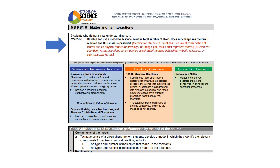So let's start by talking about what an evidence statement is. There is one evidence statement for each performance expectation, and they provide details for how students will demonstrate how they have met that performance expectation. They are available for all performance expectations for kindergarten through high school. Remember that the performance expectation describes how a student will be assessed on the standard. By writing objectives using these evidence statements, you are also really looking at what your assessments need to have in them as well. So this is a great backwards planning tool.